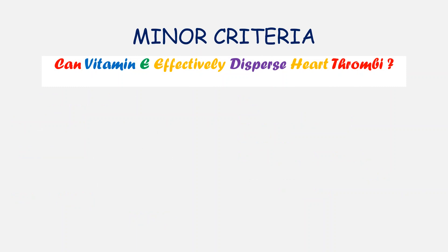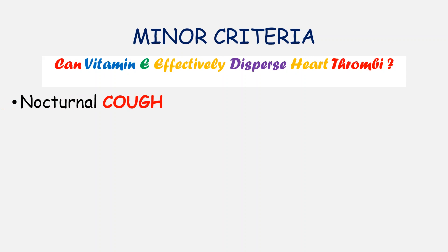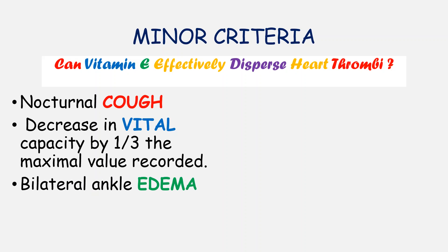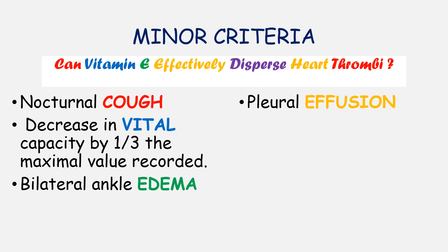The mnemonic for minor criteria is: 'Can vitamin A effectively disperse heart thrombi?' There has been research showing that vitamin A has some anticoagulant properties protective against thrombotic events, but whether it can disperse already-formed thrombi is a minor question. C stands for nocturnal cough. V stands for vital capacity — this criterion is met if there is a decrease in vital capacity by one third of the maximum value recorded. The first E stands for bilateral ankle edema. The second E stands for pleural effusion.